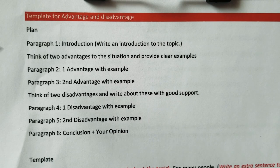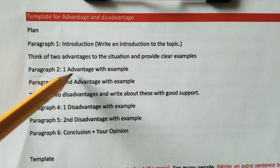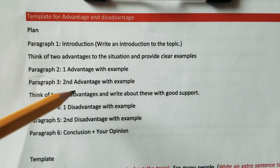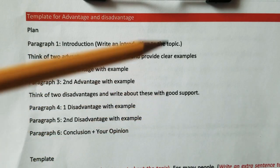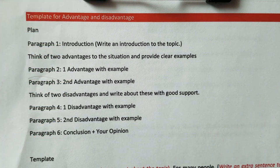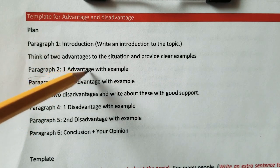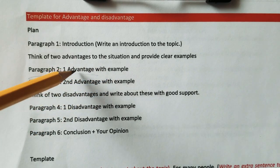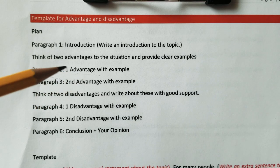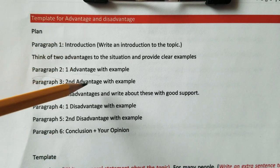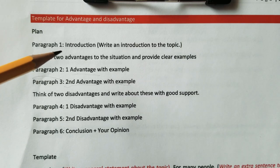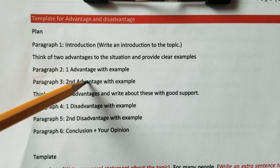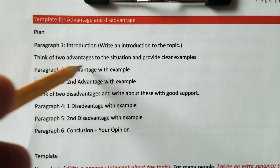Before you go deep and start writing, first brainstorm some ideas — think of some advantages and disadvantages. Pick at least two advantages you think you can justify easily. For example, for the tourism topic, the first advantage is that it brings money to the country, and the second advantage is that it promotes our country and culture worldwide.